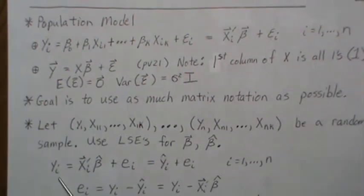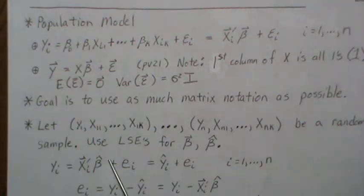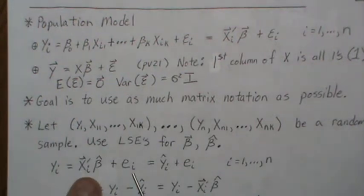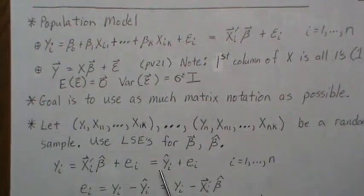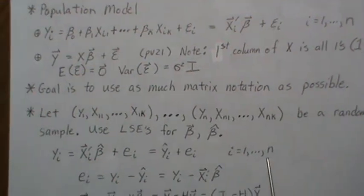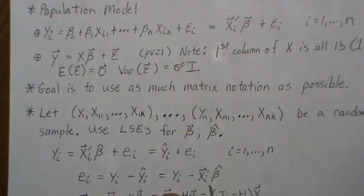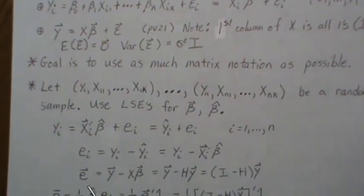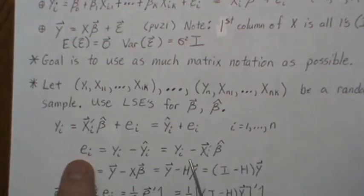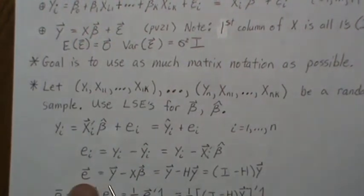We want to use the least squares estimates for beta, namely beta-hat. Y equals our least squares line equation plus some residual. Generically we write this as Y-hat, for i equals 1 to n. The residual term — if we subtract over Y-hat — we get this, or thinking in terms of X and beta.